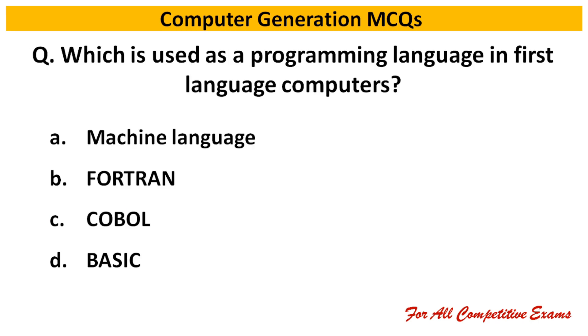Next question: The idea of the first general purpose digital computer was proposed in — Right answer is 1833. Next question: Which is used as a programming language in first generation computer? Right answer is machine language.